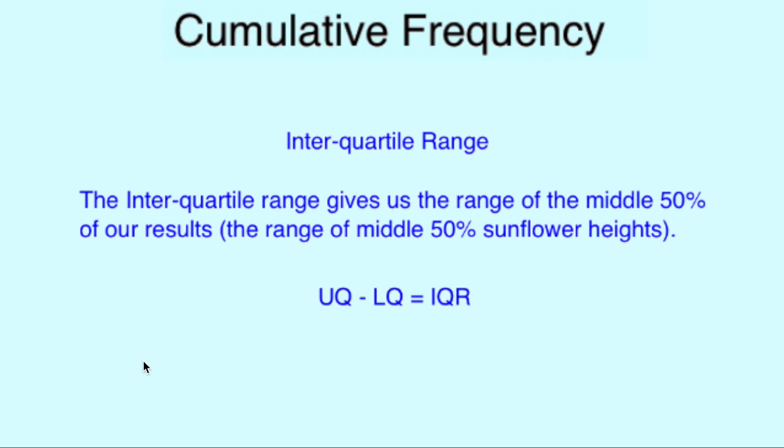Now we have our upper quartile and lower quartile values, we can work out our interquartile range. In other words, we can work out the range of heights in the middle 50% of our sunflowers. The equation is simple: we take our upper quartile of 115 cm and take our lower quartile of 77 cm, and we get our result of 38 cm. This means that our middle 50% of sunflower heights are at most 38 centimeters different in height.